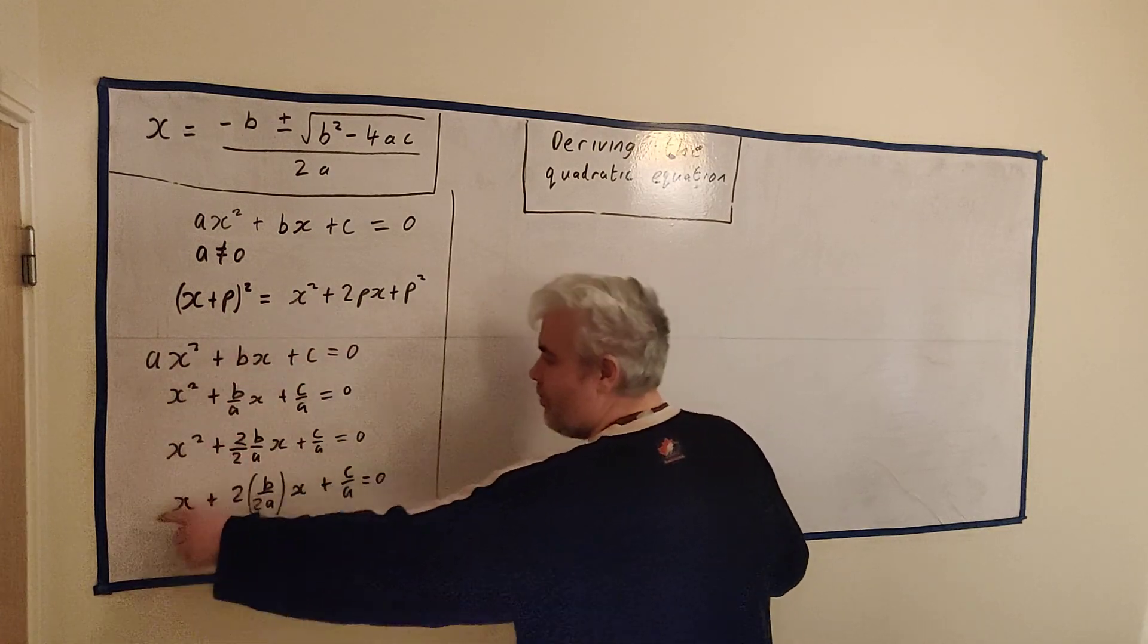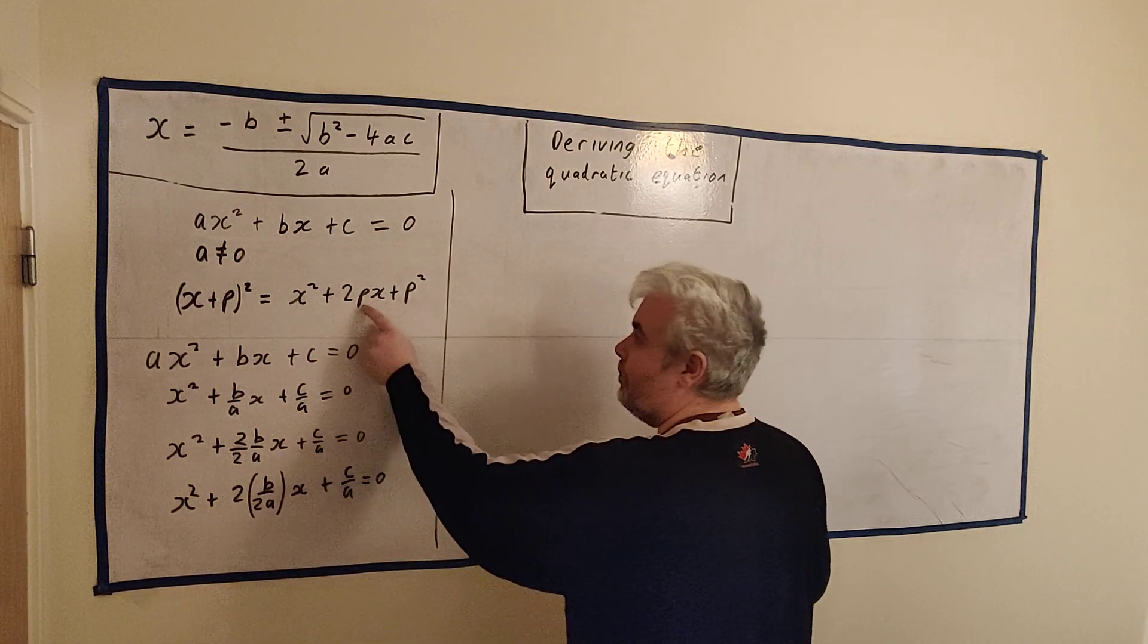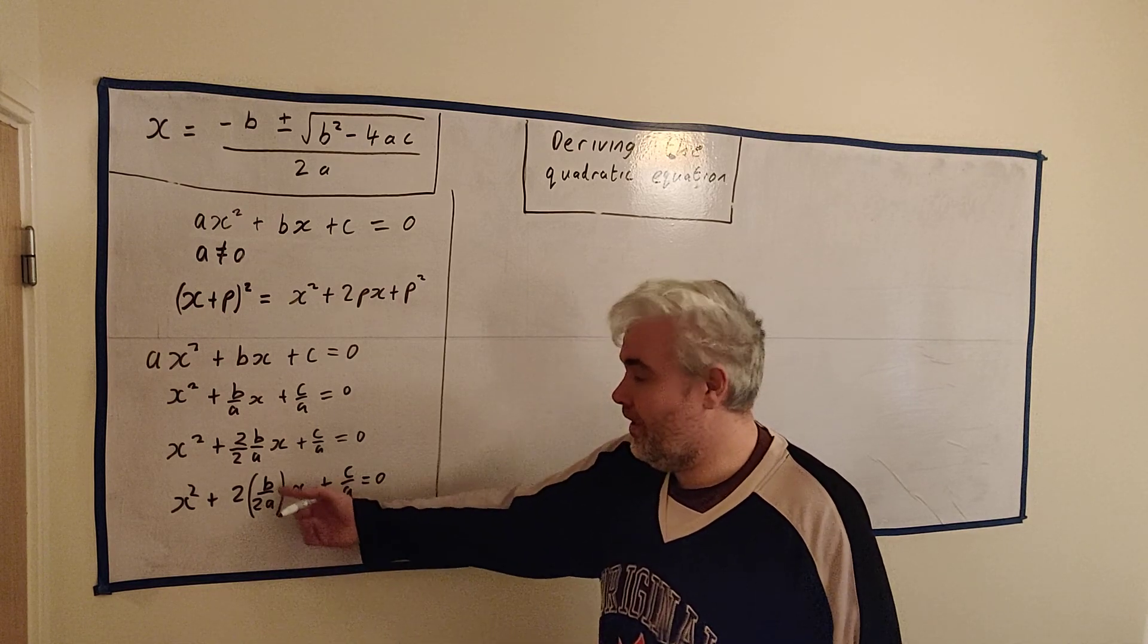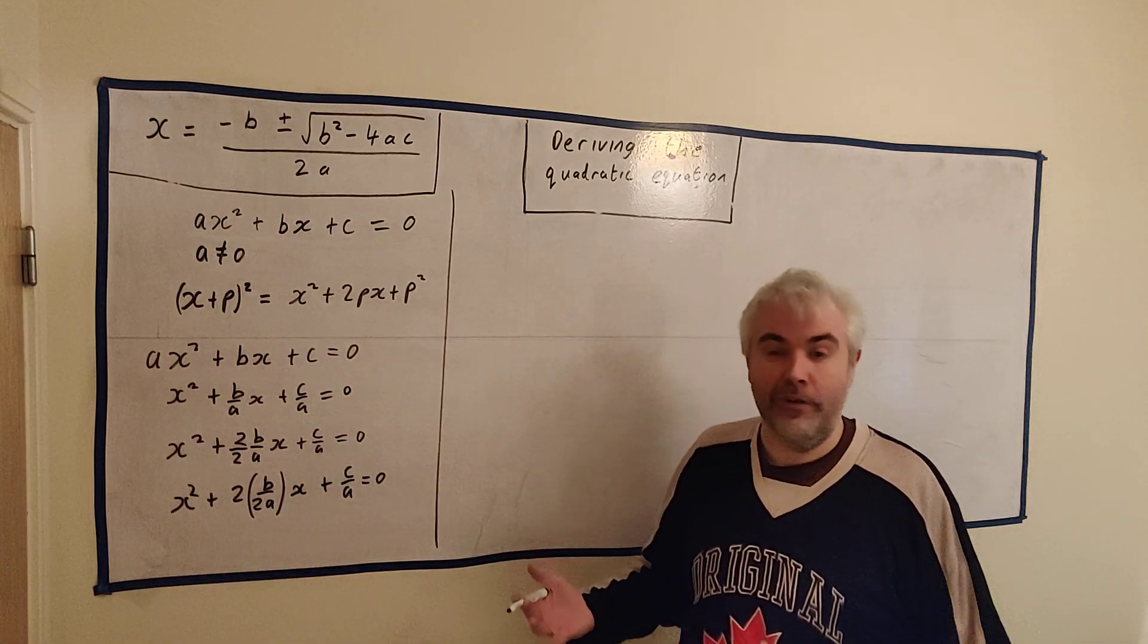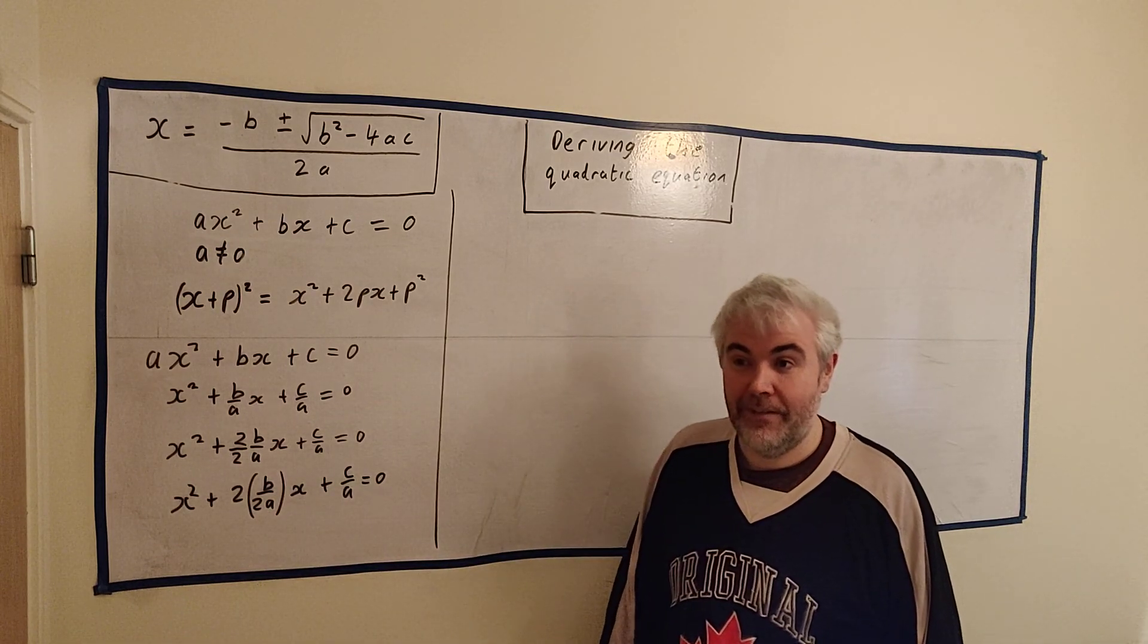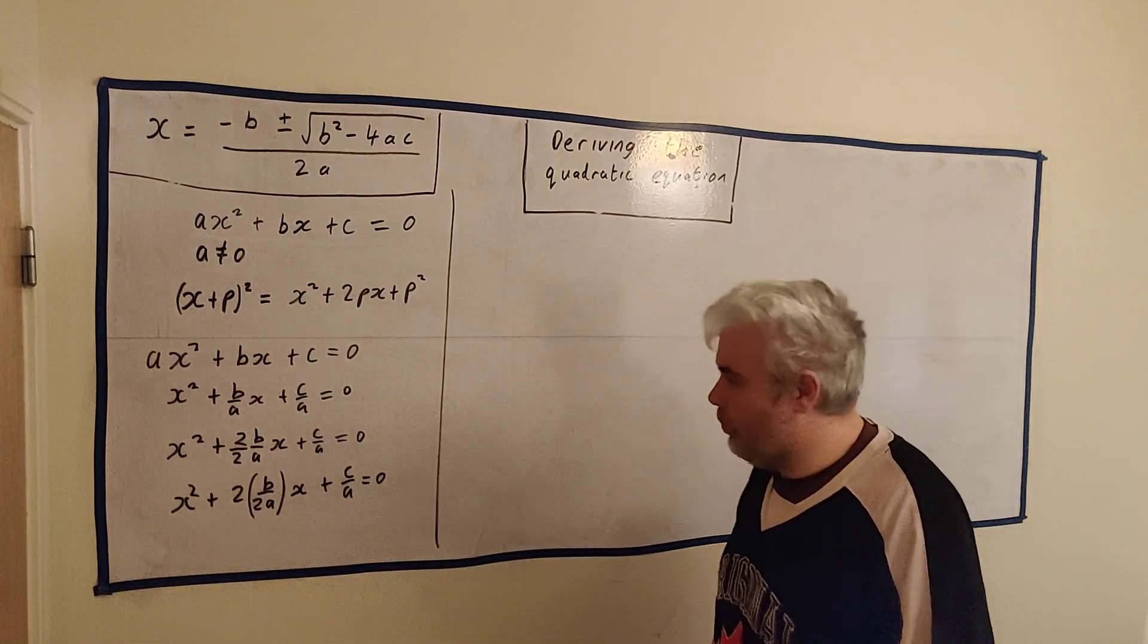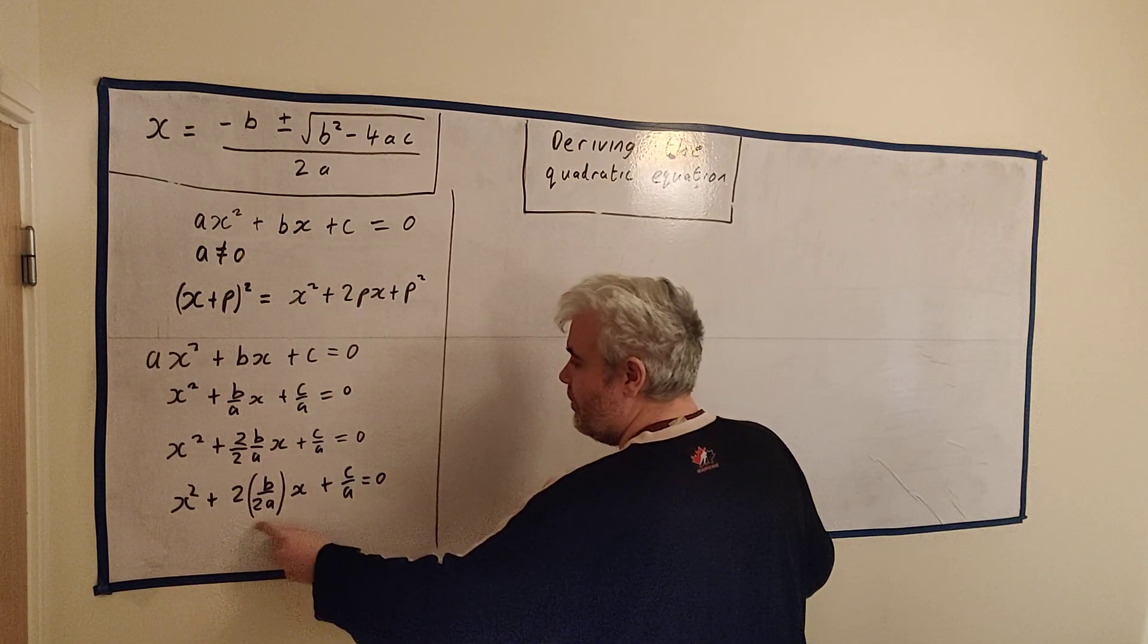Right, so this is now looking a little like this. Let's see. X squared plus two times b over 2a. I've just moved this around a little. So it looks a little more like this. X plus c over a equals zero. Now we're starting to look like it. We have x squared. We have two multiplied by a number. This doesn't look like a number, but it is. b divided by 2a is a number. Think of it like if these were real numbers.